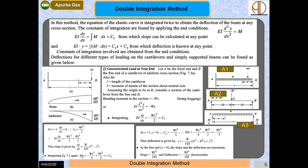Integrating again: EI · y = −Wx³/6 + (WL²/2)x + C₂. At x = L, deflection y = 0, so C₂ = −WL³/3. Substituting: y = −W/(6EI) · (2L³ − 3L²x + x³). At the free end where x = 0, the slope is WL²/(2EI) and the deflection is −WL³/(3EI). The negative sign confirms deflection is in the downward direction.